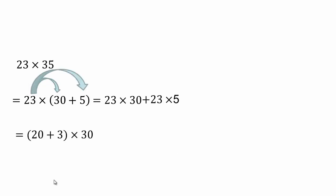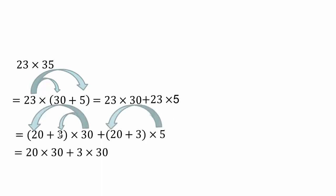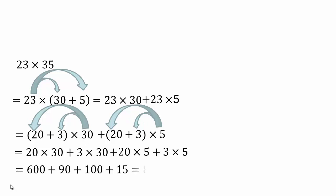Once you have that, we still have to do 23 times 30 — so 20 plus 3 times 30. We're using the distributive property to multiply. So 30 times 20, 30 times 3, 5 times 20, and 5 times 3. So 600, 3 times 30 is 90, 20 times 5 is 100, and 3 times 5 is 15, for a total of 805.